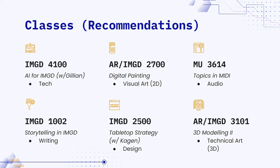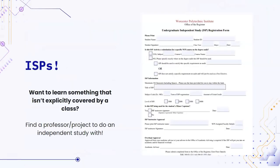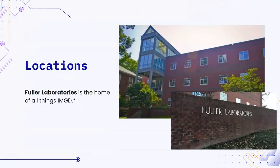Talk to the faculty, make friends with the faculty. Talk to the upperclassmen — we're not as scary as we seem. Also just talk to each other. IMGD is a community, so help each other when you can. Next we're going to talk about the locations available to IMGD students. Most of these things are in Fuller. We're kind of insular in the sense that you can stay in Fuller for the whole day and be in 30 different places.